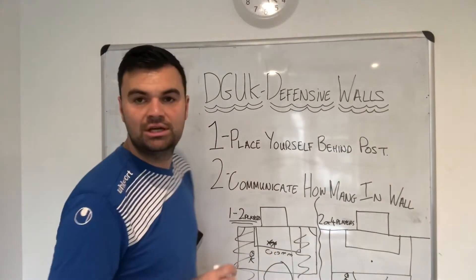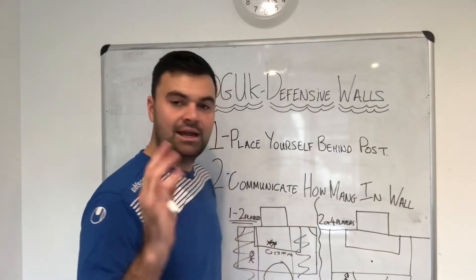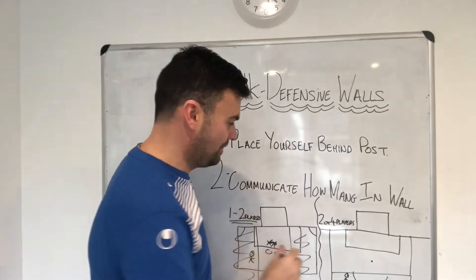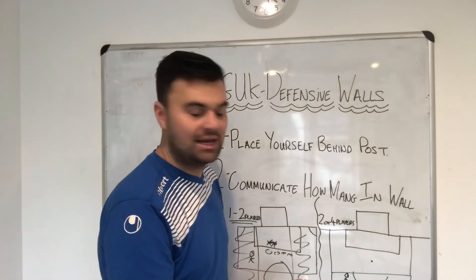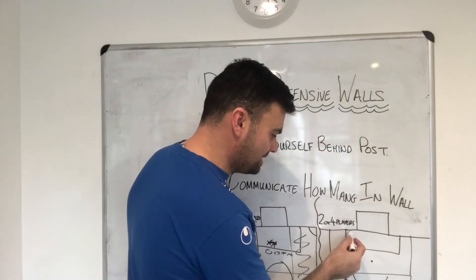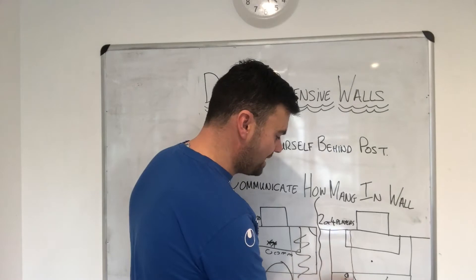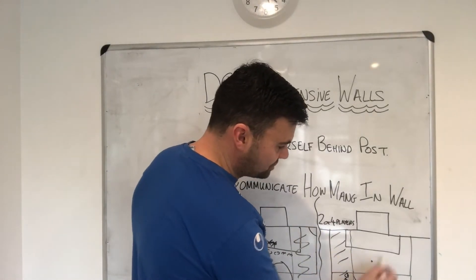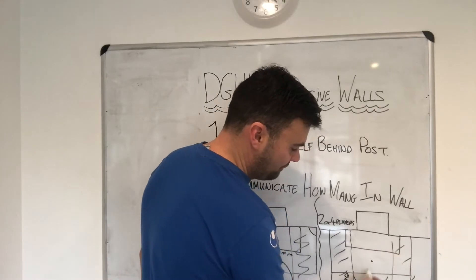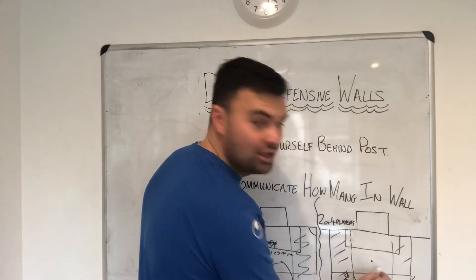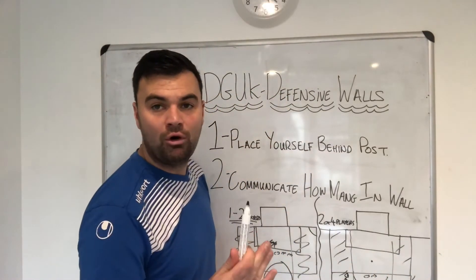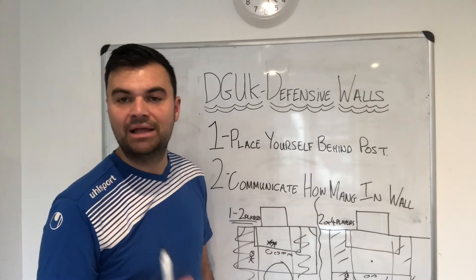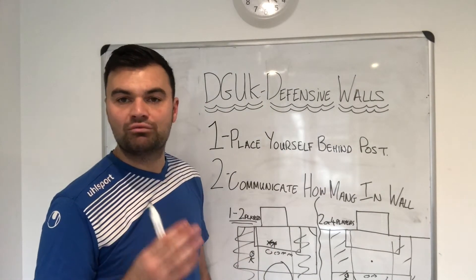Now let's move on to the full size goal, keeping it really basic and simple. If you're in a full size goal, 11v11, the same rule applies. If it's in a wide area, you're looking at two in the wall. If it's more of a central area, you're going to be looking at four players in the wall. It's going to slightly vary, but this is just to give you a rough guidance.